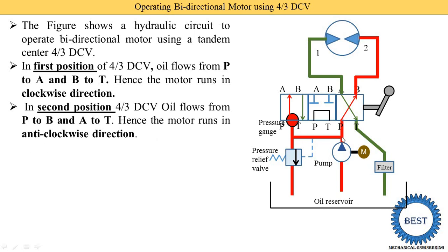How does the motor run anti-clockwise? Pressurized oil from the pump enters port P, then is supplied to port B. From port B, the red color line is now on the right side of the bidirectional motor — opposite to earlier. The oil strikes the vanes of the motor, and the design of the vanes is such that when oil is supplied from this side, the motor rotates anti-clockwise. The return oil exits from the left side, enters port A, flows from A to port T, and is returned to the oil reservoir through the filter.